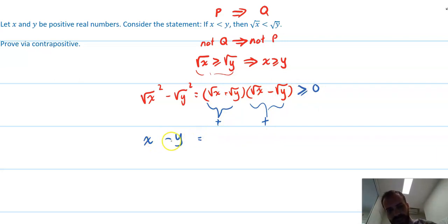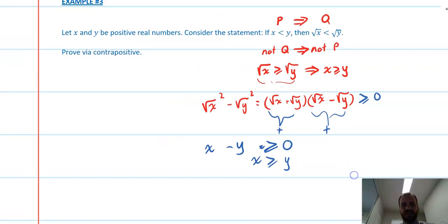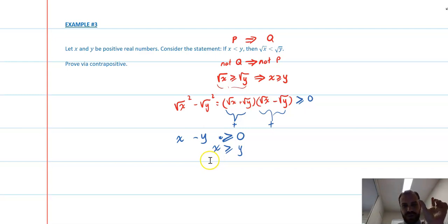Now we can say that X minus Y is all of that, which is greater than or equal to zero, which is what we wanted in the first place: X is greater than or equal to Y. A tricky one there, but that's contrapositive. Really what we're looking at is flipping those signs.